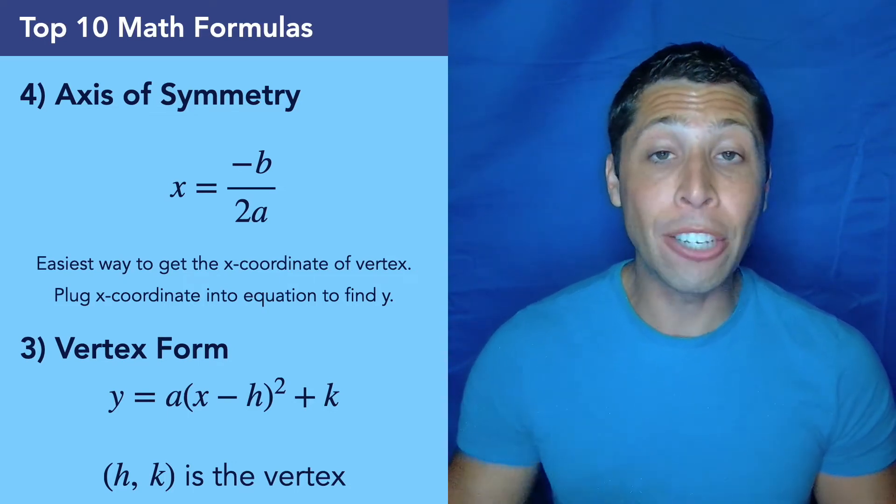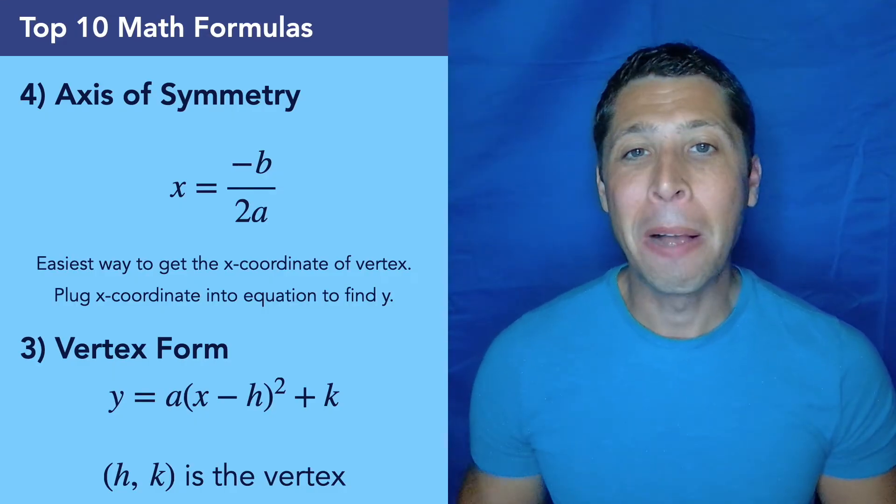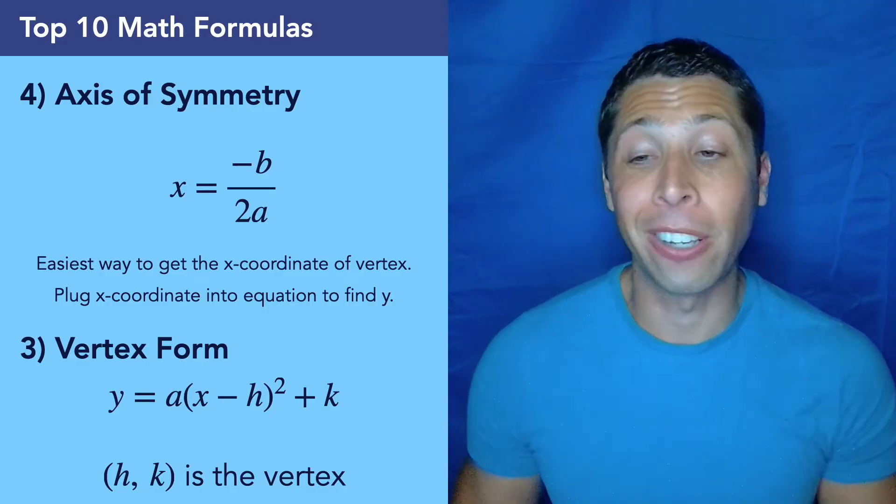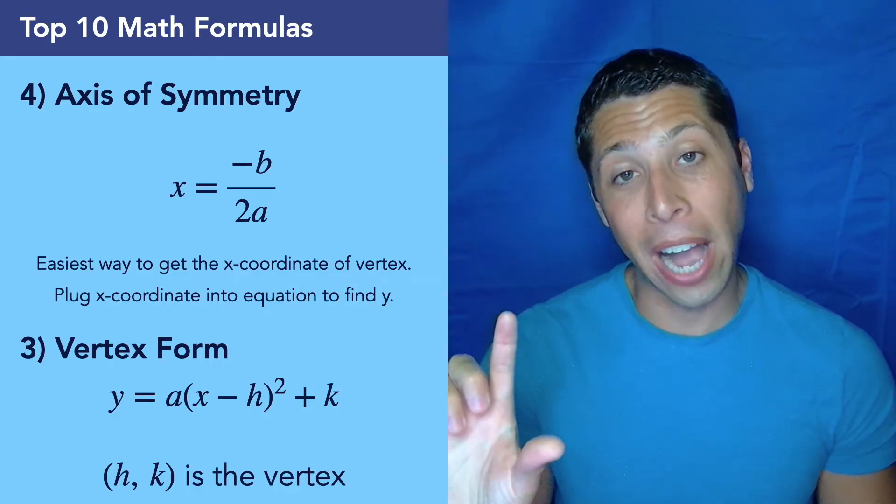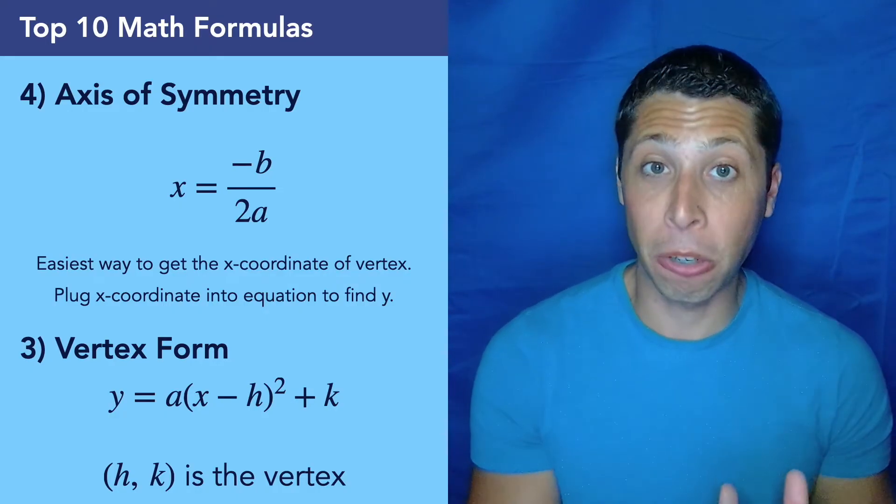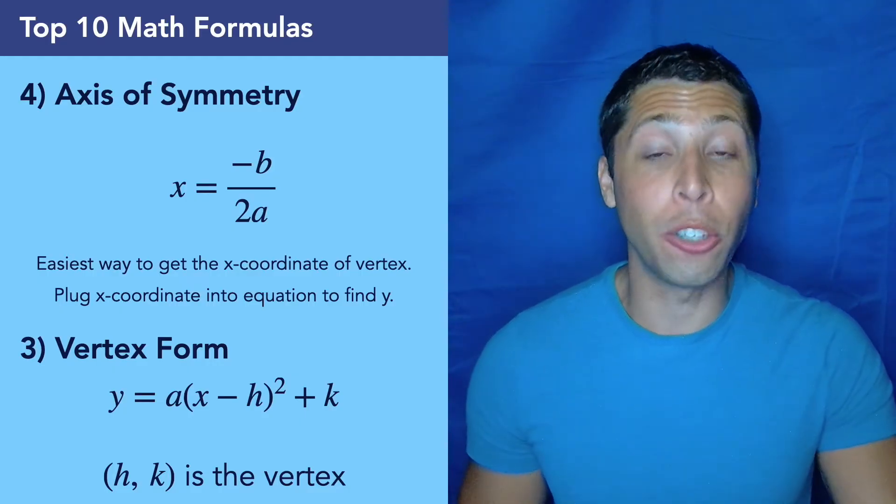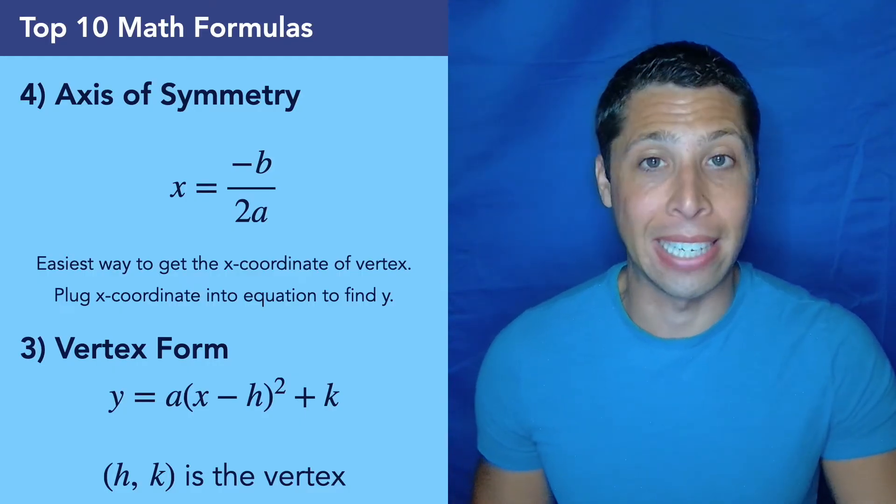So we also use the letters h and k, kind of like we do with the circle, because just like h, k is the center of the circle, the vertex is kind of the center of the parabola. And so just be careful, because the h term will kind of be the flipped sign, but the k term will not. So that formula is really good. You are almost certainly going to see it on every SAT.